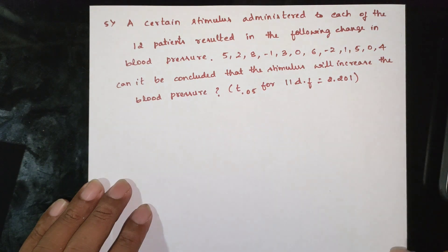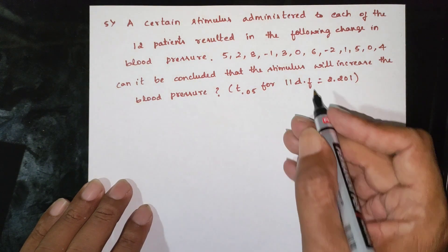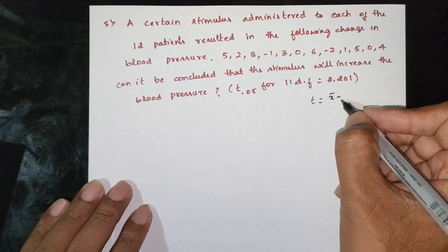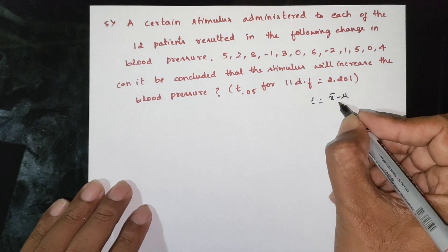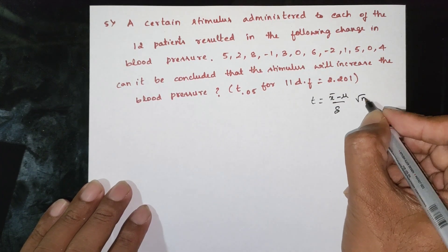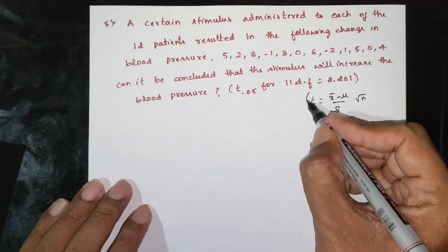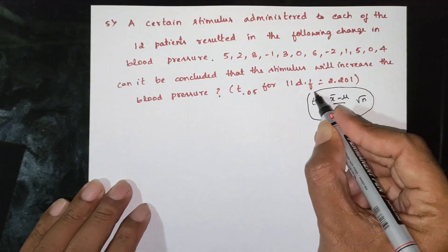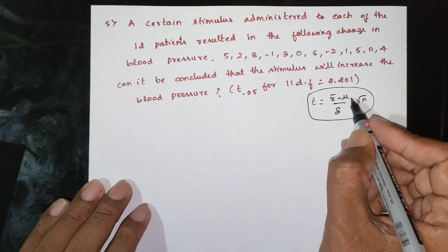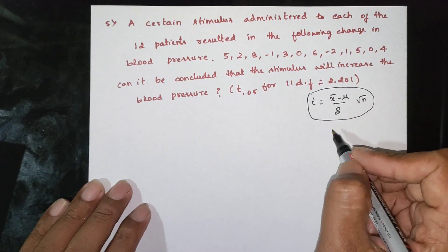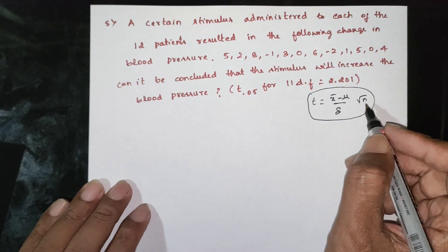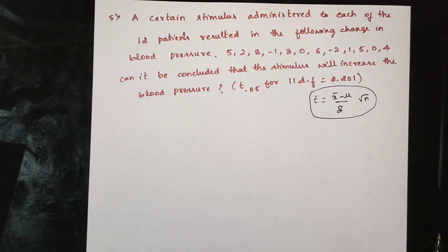T is the formula: x-bar minus mu, divided by s into root n. Here x-bar is the sample mean, mu is the mean of the universe, s is the standard deviation, and n is the sample size.